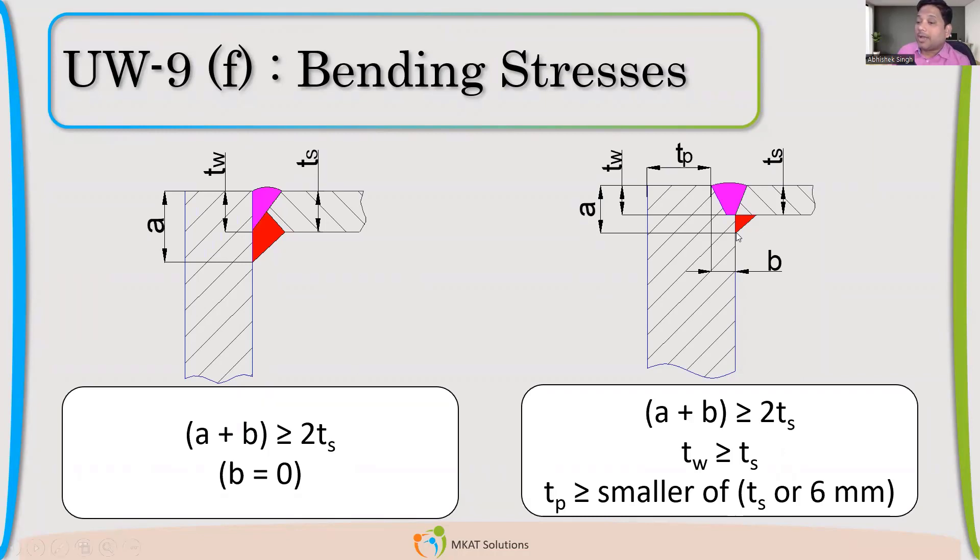So here you have a B. B is nothing but the depth which you have created here. So A plus B, if that is also increasing more than two times thickness, then it is acceptable. And TW should be greater or equal to TS. Whatever TW we are maintaining should be, I need to have full, I need to weld at full thickness. So that is what is the requirement as per code.